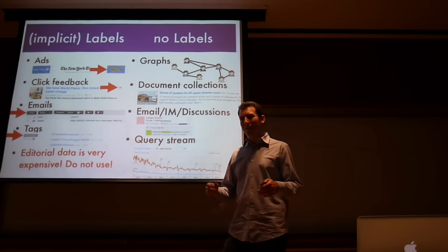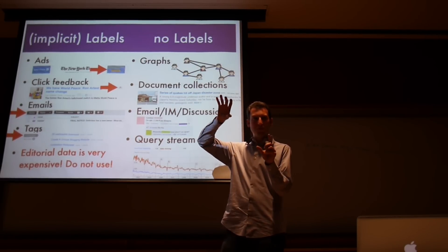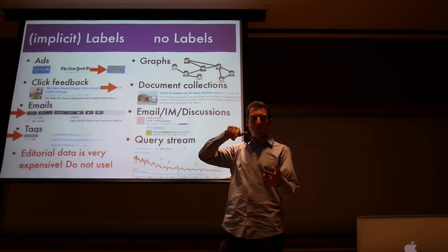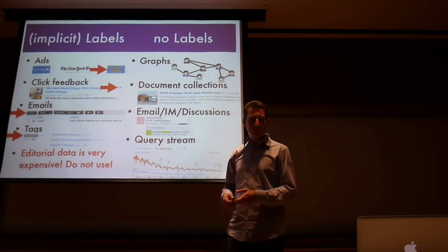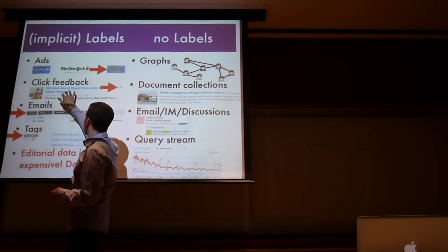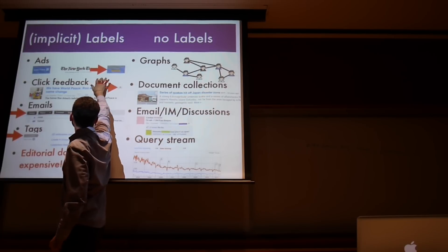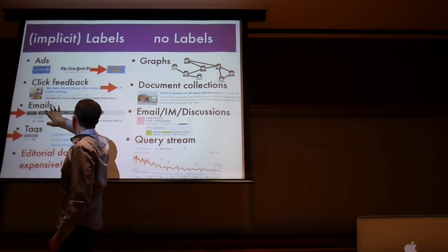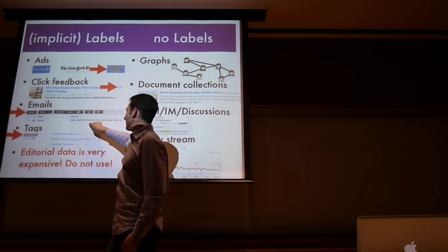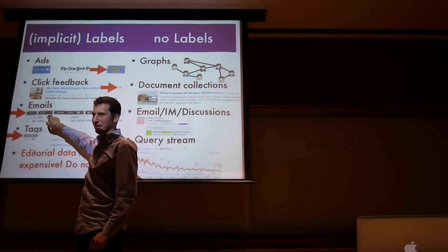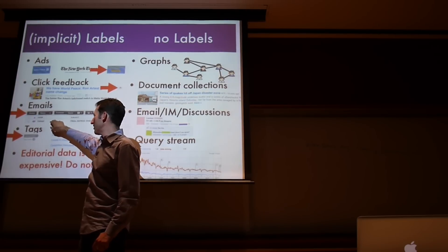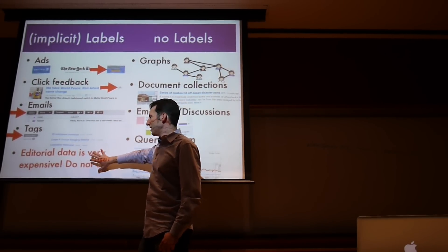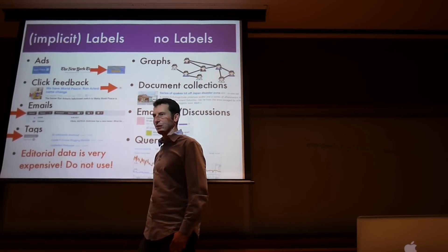In this class I can show you specific crystallized options — ways how you can solve a problem to address a very specific application — but you will actually have to model the thing. To give you an idea, you might have implicit labels: with ads you get clicks, you might also get some tags. With emails, the fact that I might have deleted an email unseen just by looking at the subject might be a good indication that it is spam. Sometimes people tag things, like on Delicious.